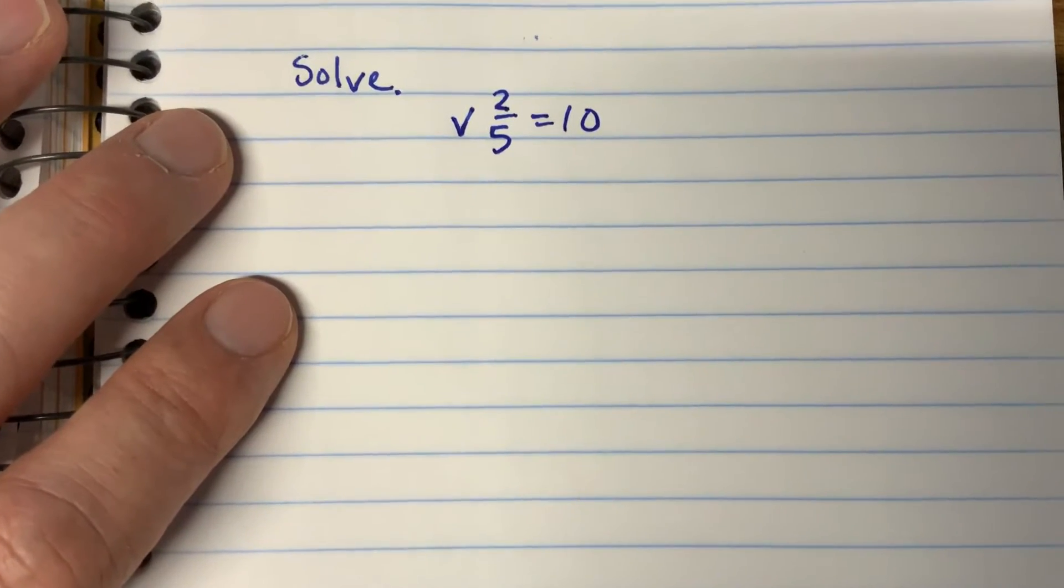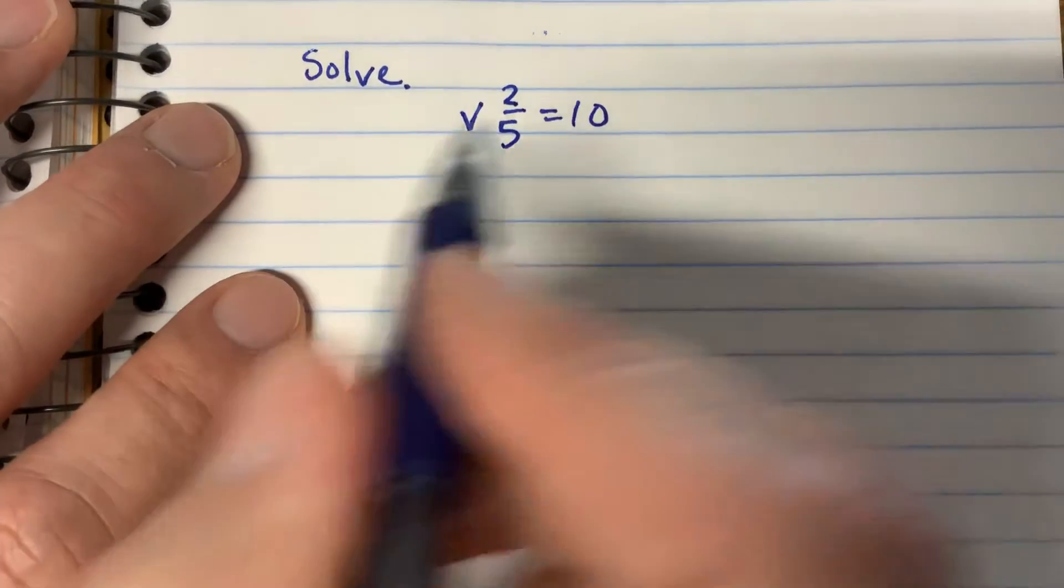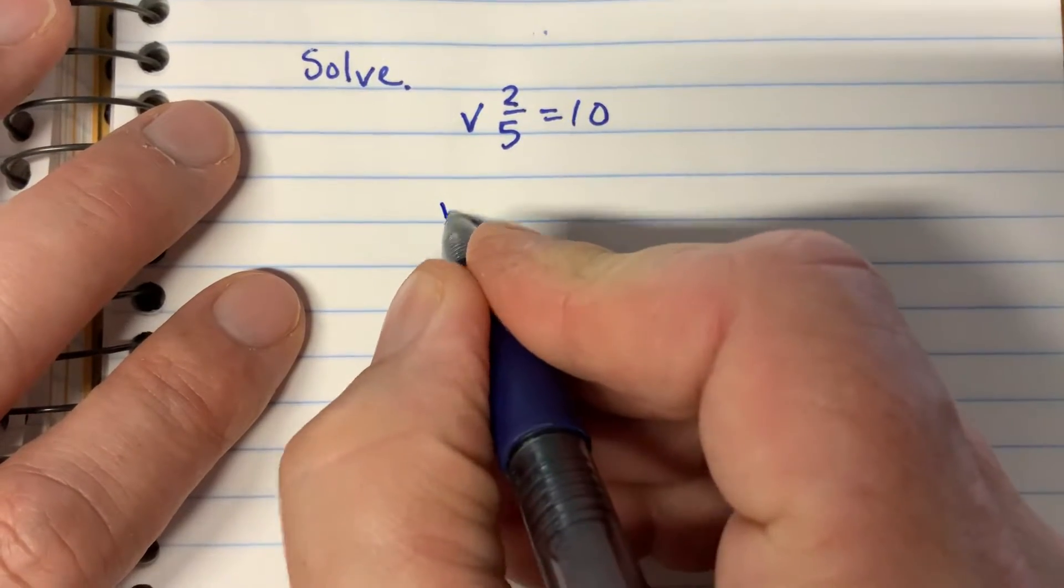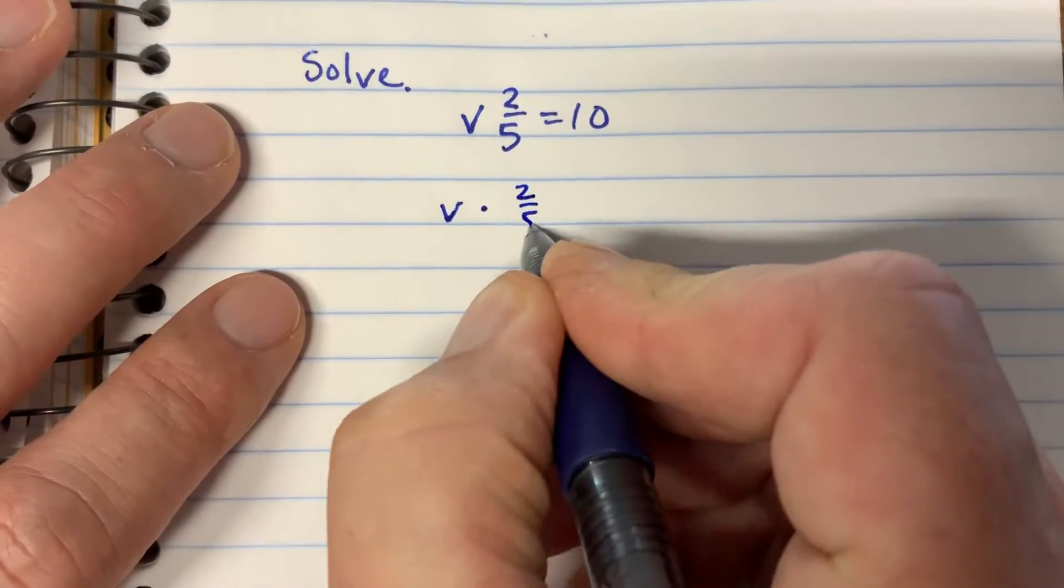Okay, our next one is an equation here: v two-fifths equals 10. So whenever a variable is next to a number, it means multiplication.